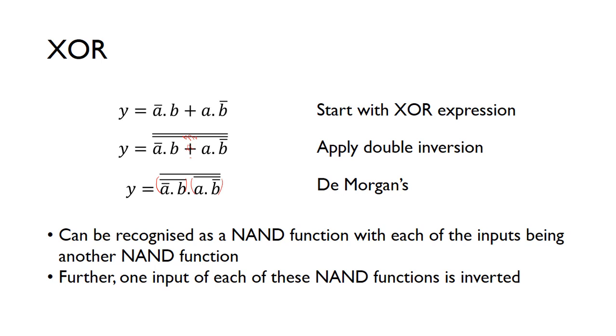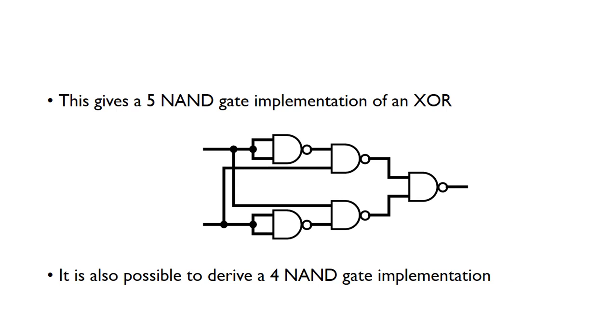You can see that that's several NAND functions grouped together. We've got this top NAND function. So the parts that are bracketed now, and this very top bar, that gives us one NAND function. And the inputs to that are themselves NANDs. And then further from that, one of the inputs to these NANDs are inverted. So that gives us this five NAND gate implementation of an XOR.